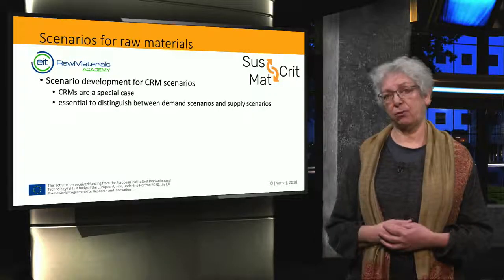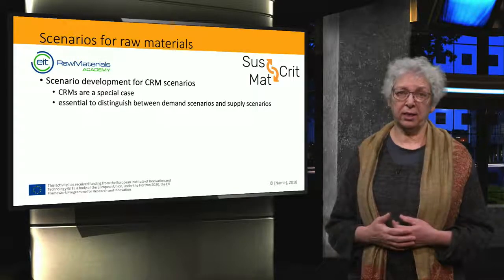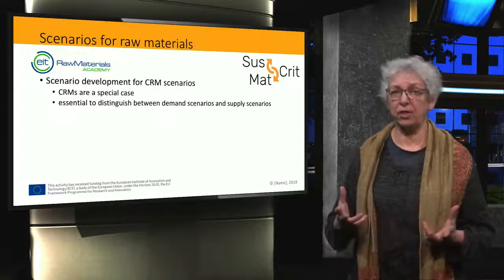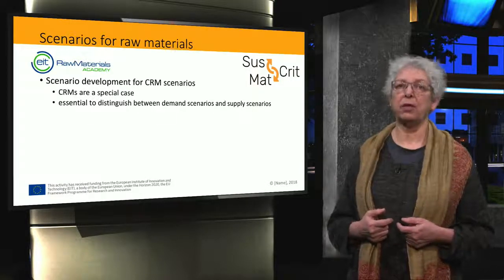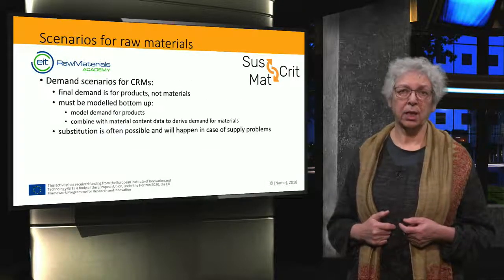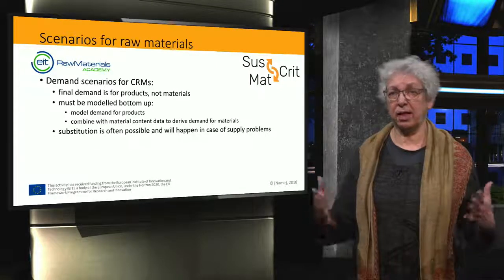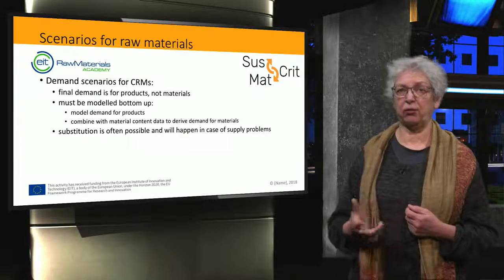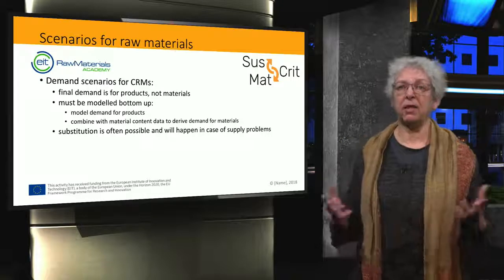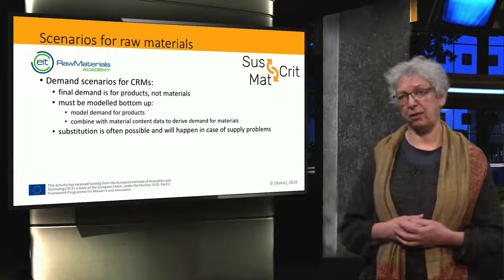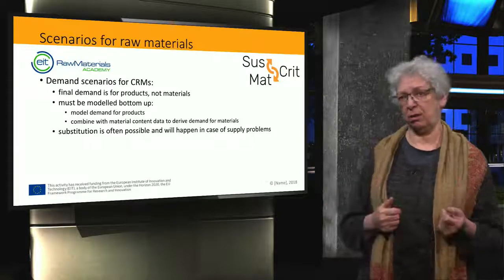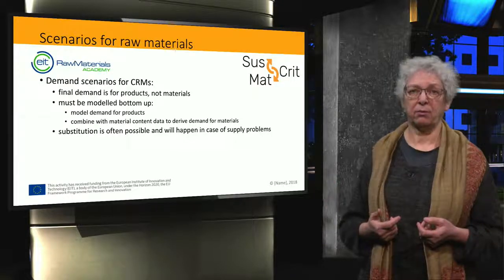When developing storylines for critical raw material scenarios, a first essential distinction to make is that between demand and supply. Demand scenarios tell us about what consumers or end users want, while supply scenarios give information on how to supply. When composing demand scenarios, we have to realise that end users have no demand for materials, but for products and services. Consumers want computers, mobile phones, or solar cells — not indium, gallium, or cobalt. In the modelling step, it is therefore essential to use a bottom-up approach: first establish future demand for products, and then combine that with the material content related to those products.